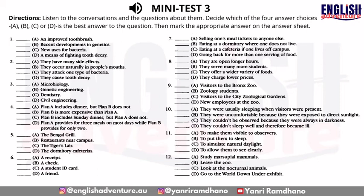So once again, Plan A is three meals a day except on Sunday, and Plan B is two meals. On Sunday evenings, everyone's on their own because all the dormitory cafeterias are closed. Food Services does operate some restaurants then, such as the Tiger's Lair over by the stadium or the Bengal Grill at the student center. But these restaurants don't take meal tickets.